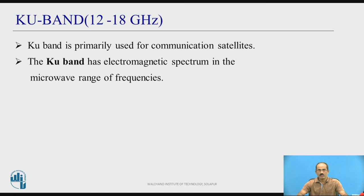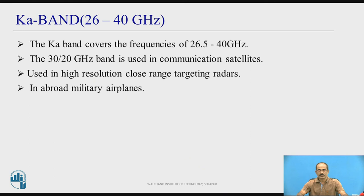The Ku band frequency range is 12 to 18 GHz, and it is primarily used for communication satellites. The Ku band has electromagnetic spectrum in the microwave range of frequencies. The K band frequency range is 26 to 40 GHz — specifically, the K band covers 26.5 to 40 GHz. The 30 by 20 GHz band is used in communication satellites and also in high-resolution close-range targeting radars and military airplanes.